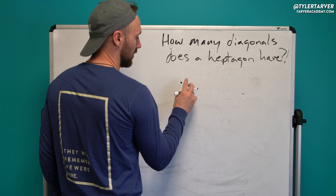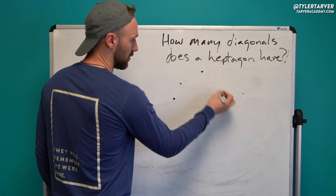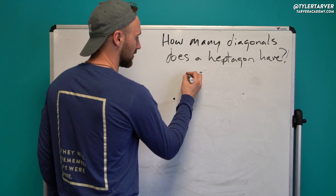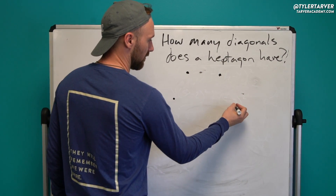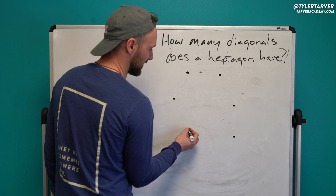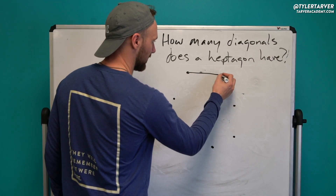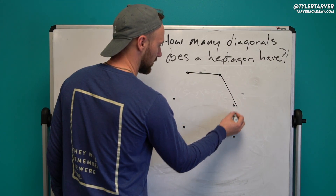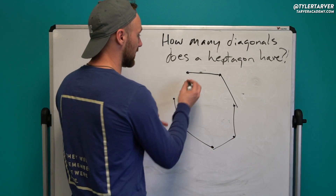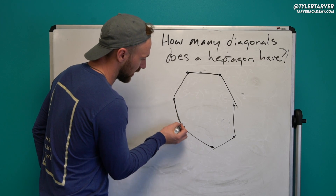Let's do one, two — oh goodness, I'm not good at drawing heptagons — three, four, five, six, seven. Maybe that's good. One, two, three, four, five, six, seven. This is the ugliest heptagon of all time. I'm so sorry.